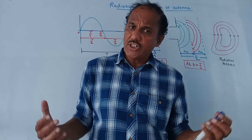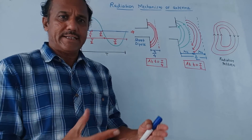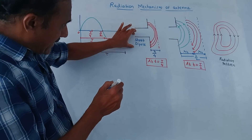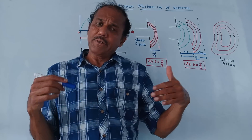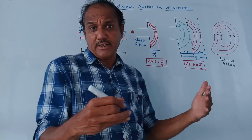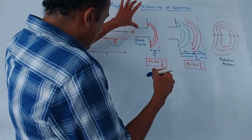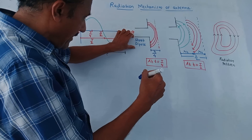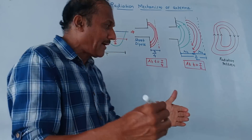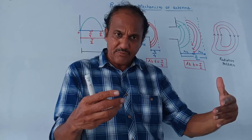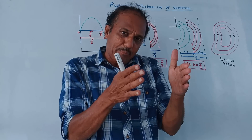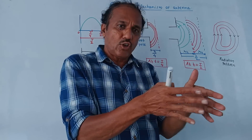Next is how radiation is generated from two wires — this is another important part. We are considering a short dipole antenna. This is a type of antenna we will study in detail later. It is a center-fed antenna, meaning the signal we want to transmit is applied or fed at the center of this antenna.